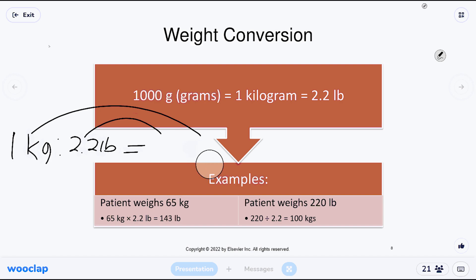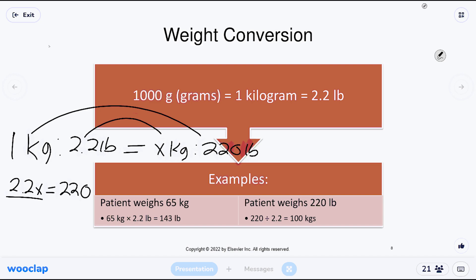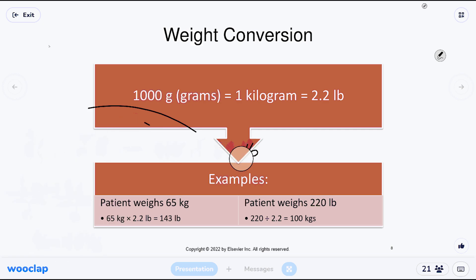Going the other direction — a patient weighs 220 pounds, how many kilograms is that? I know they're 220 pounds, and I know 2.2 pounds equals 1 kilogram, so I divide 220 by 2.2 to get kilograms. Ratio and proportion works either way. That one is pure memorization — you have to know the baseline conversion from pounds to kilograms: one kilogram is worth 2.2 pounds.